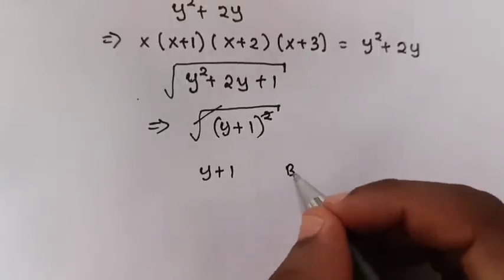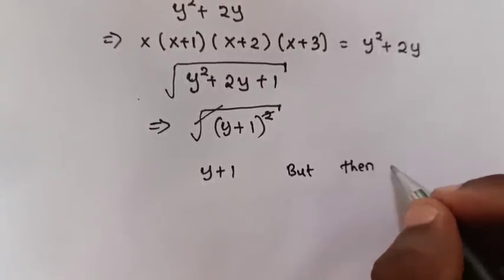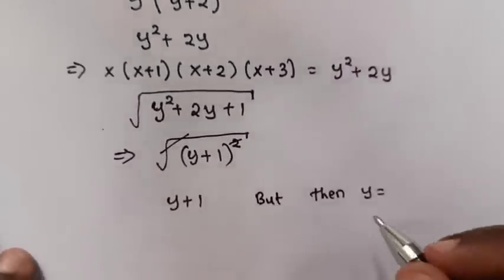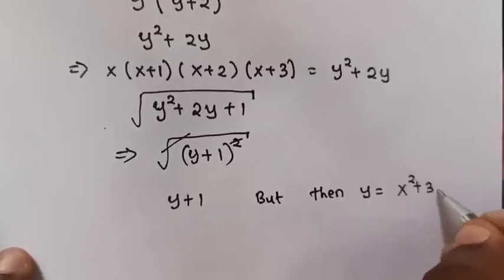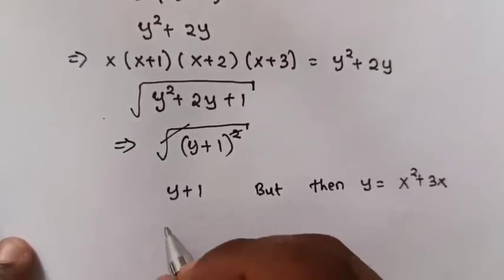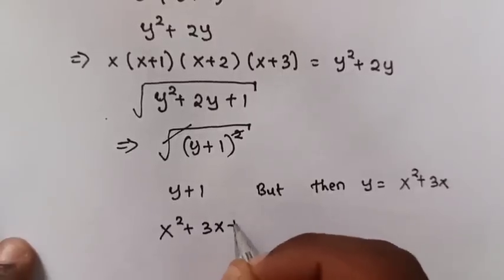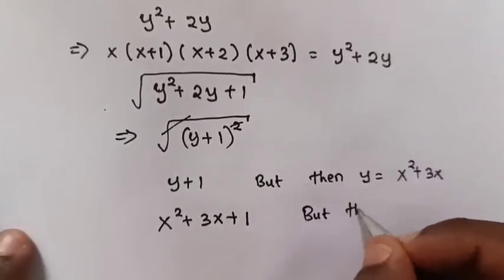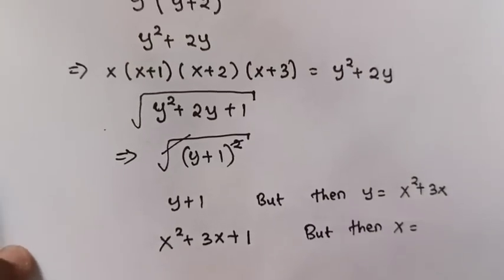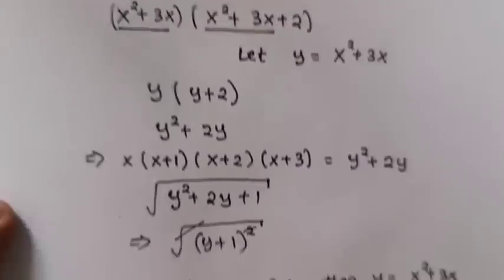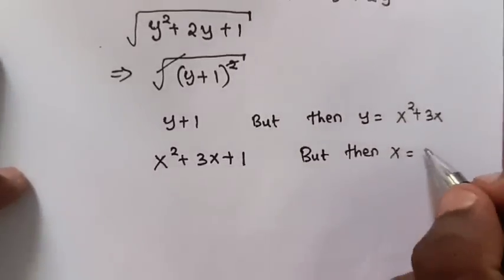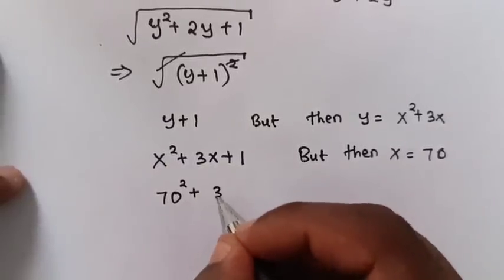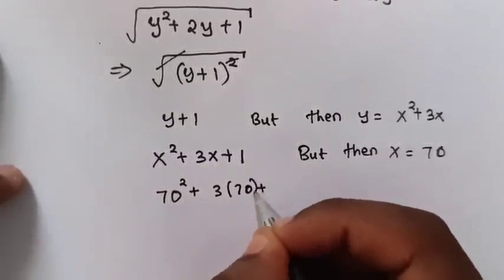But then, remember, before we let y equal to x squared plus 3x. So here it will be x squared plus 3x plus 1. But then, x is equal to 70 — before we let x equal to 70. So we substitute here: it will be 70 squared plus 3 times 70 plus 1.